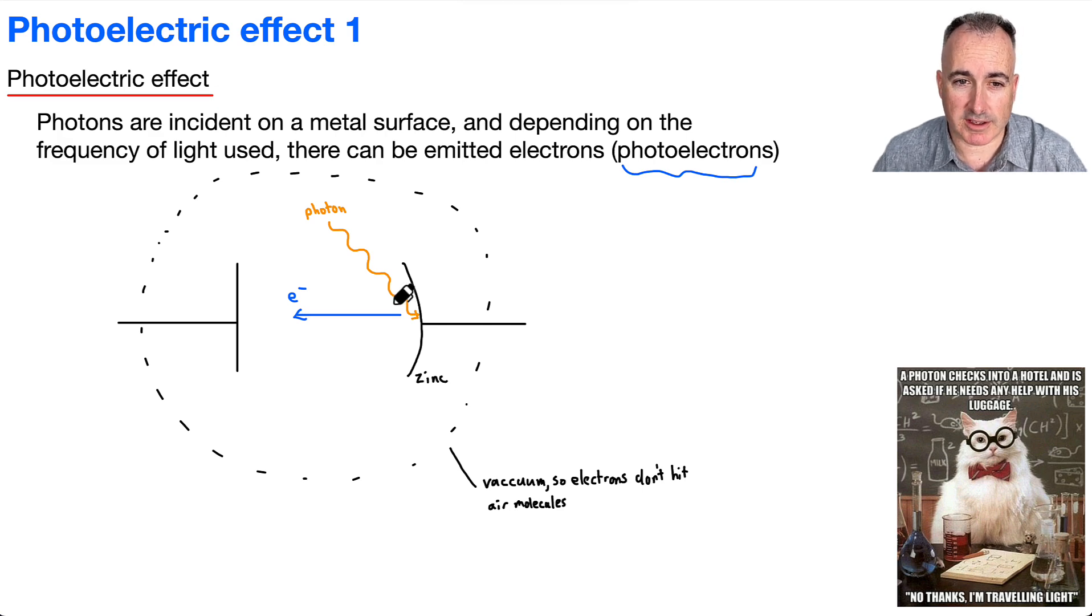Now, this whole thing here, these ones can fly over to this end and make a connection, and that way you can detect them. Now, we have this whole thing here in a vacuum, and that's just so that the electrons don't run into any errant air molecules or things like that.